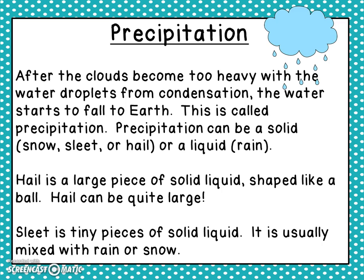Hail is a large piece of solid liquid shaped like a ball. Hail can be quite large — sometimes the size of BBs, the size of marbles, and there have even been some the size of oranges. Sleet is tiny pieces of solid ice and is usually mixed with rain or snow.